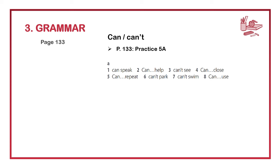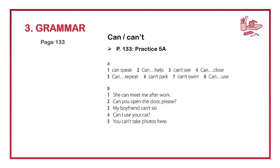Now please go to part B: rewrite the sentences using the correct form of can or can't. Example: 'I know how to play the piano' becomes 'I can play the piano.' Number 1: 'It's possible for her to meet me after work' becomes 'She can meet me after work.' Number 2: 'Please open the door' becomes 'Can you open the door, please?' Number 3: 'My boyfriend doesn't know how to ski' becomes 'My boyfriend can't ski.' Number 4: 'Is it okay if I use your car?' becomes 'Can I use your car?' Number 5: 'It's not permitted to take photos here' becomes 'You can't take photos here.'